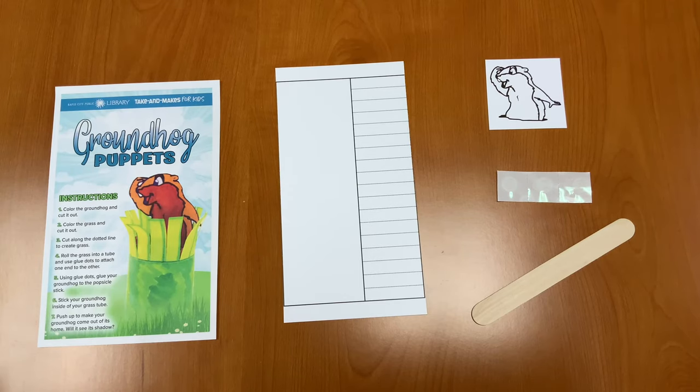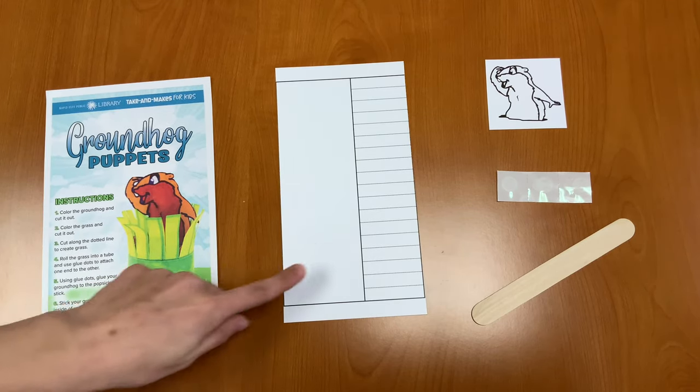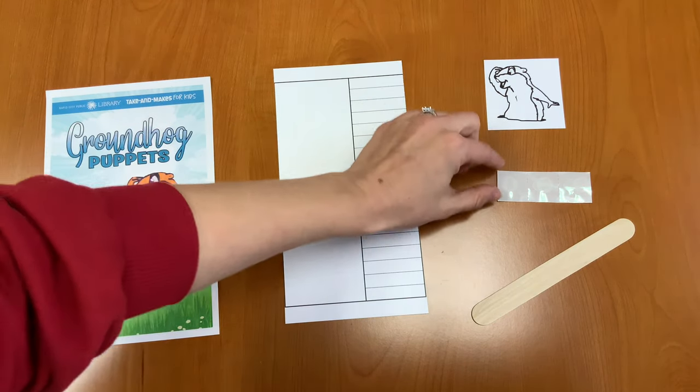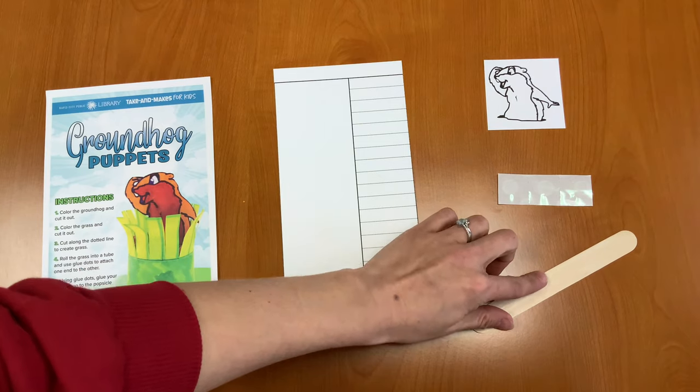In your Take and Make kit, you should have an instruction sheet, a grass template, a groundhog template, three glue dots, and a popsicle stick.